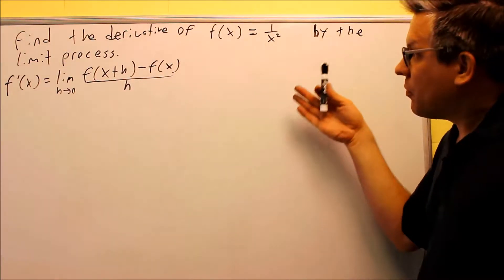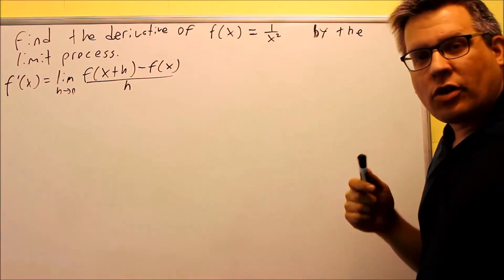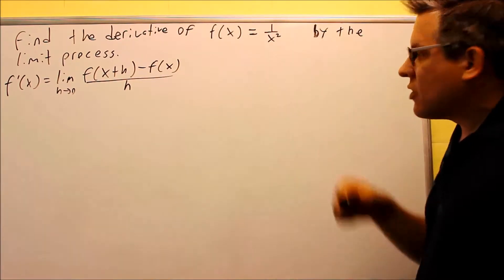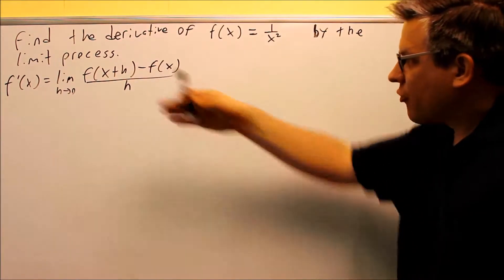Okay, one more problem we're going to do with the limit process. This one's going to be involving a rational expression, and we have a square on the bottom. Here's our formula for the derivative.